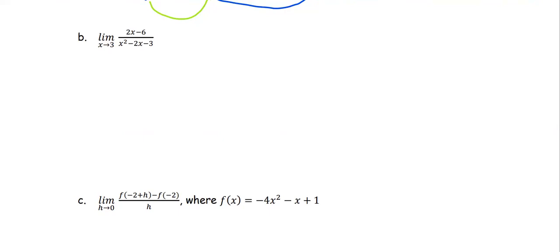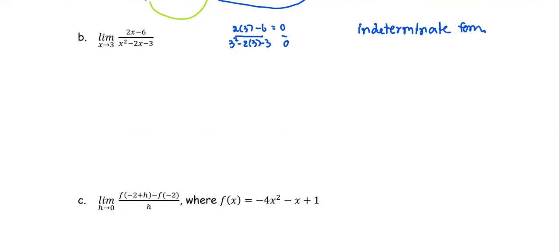The next example is a similar situation. Substituting x = 3 into the numerator gives 2(3) − 6 = 0, and the denominator 3² − 2(3) − 3 = 0 as well — another indeterminate form. We use the same strategy and simplify by factoring. The numerator 2x − 6 factors as 2(x − 3). The denominator x² − 2x − 3 factors as (x + 1)(x − 3), since the product is −3 and the middle term is −2, so the larger factor 3 takes the negative sign.